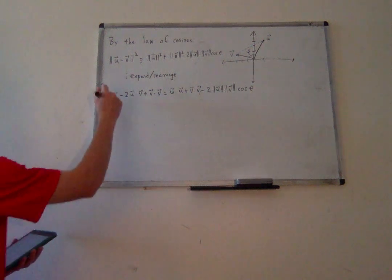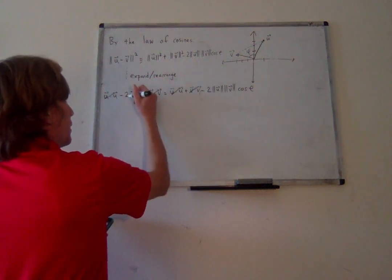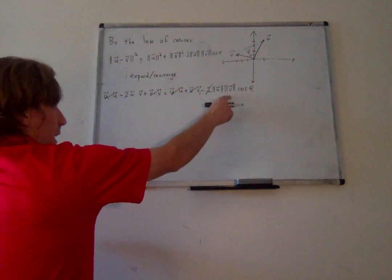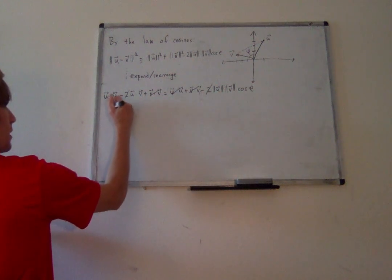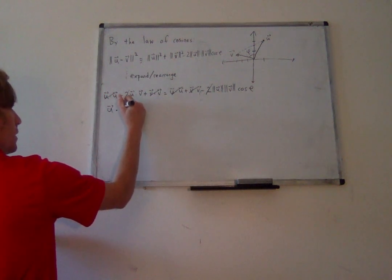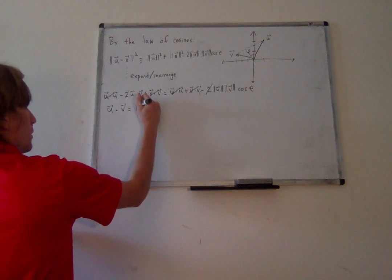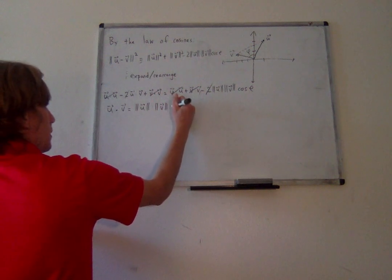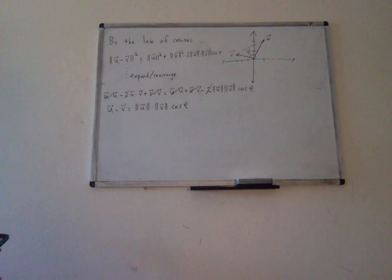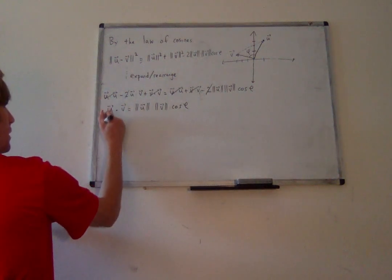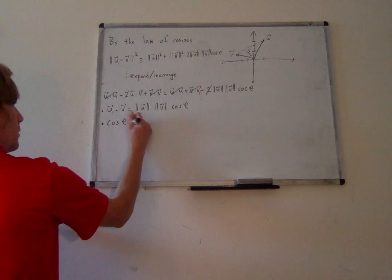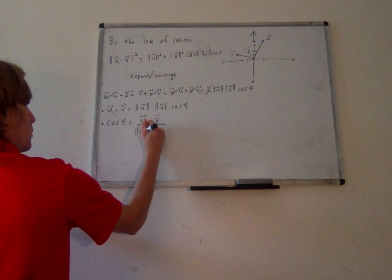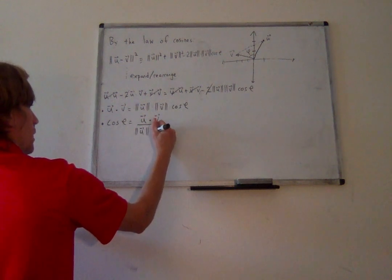We can rearrange and expand. The left side expands to u dot u minus 2(u dot v) plus v dot v, which equals u dot u plus v dot v minus 2 times the norm of u times the norm of v times the cosine of phi. Canceling like terms on either side and dividing by negative 2 gives us: u dot v equals the norm of u times the norm of v times the cosine of phi.